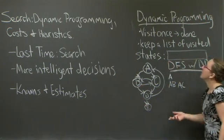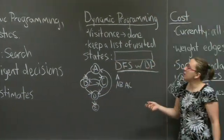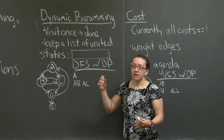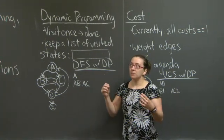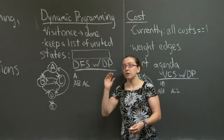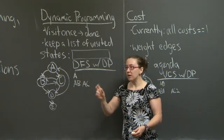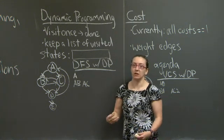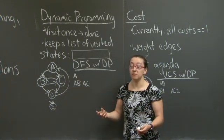The first thing that we can do in order to improve our search is use dynamic programming. Dynamic programming refers to the idea that once you've done a computation for a particular kind of problem, you can save that computation and use it later as opposed to having to engage in that computation a second time.